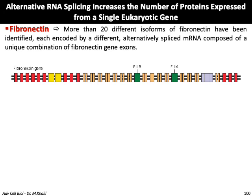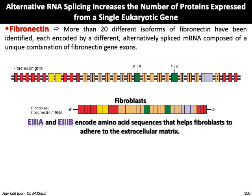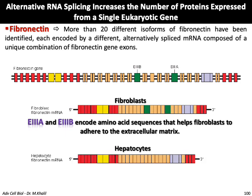The fibronectin gene can produce more than 20 different isoforms, each encoded by a differently alternatively spliced mRNA composed of a unique combination of fibronectin gene exons. In the hypothetical gene diagram, introns are shown between colored blocks representing different exons. In fibroblasts, all exons are included, with E3A and E3B encoding the amino acid sequence that enables adhesion to the extracellular matrix. In hepatocytes, exon 3 and exon 4 are spliced out during RNA processing before translation, producing a different isoform of fibronectin.